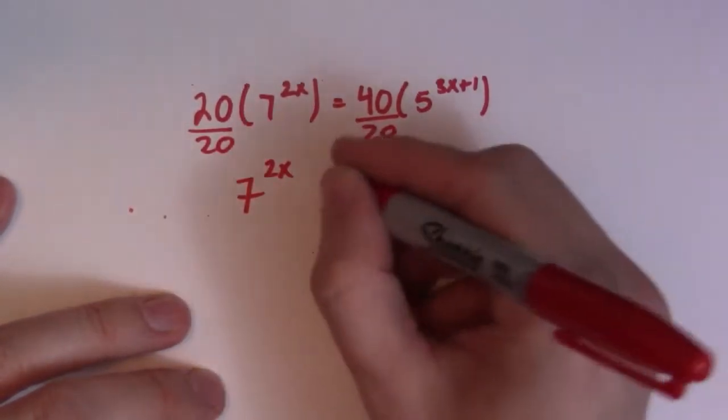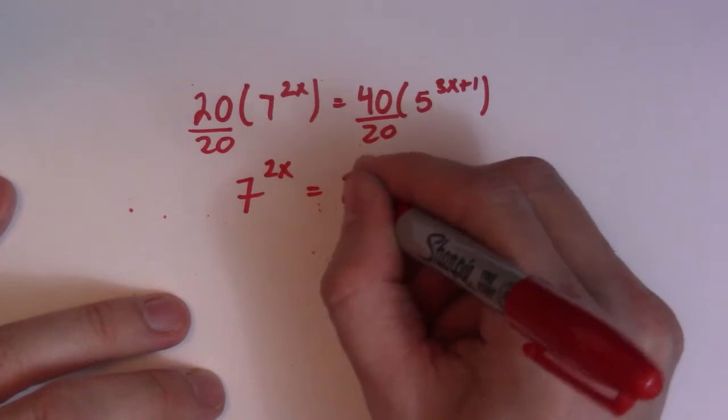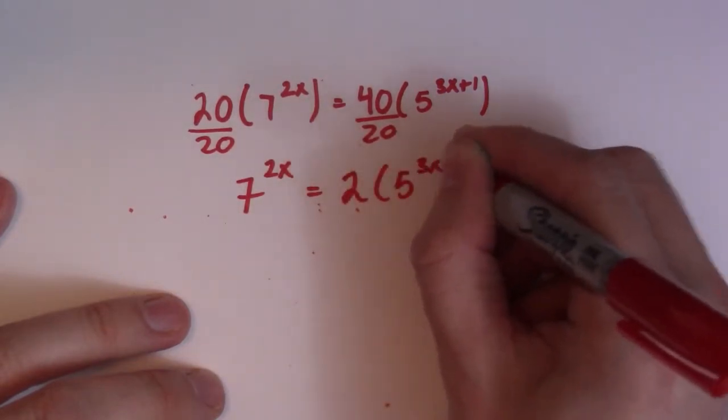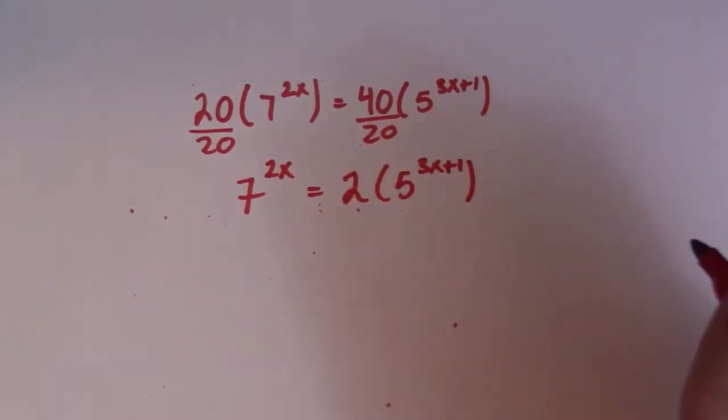So I get 7 to the 2x, and this is equal to 2, 5, 3x plus 1.